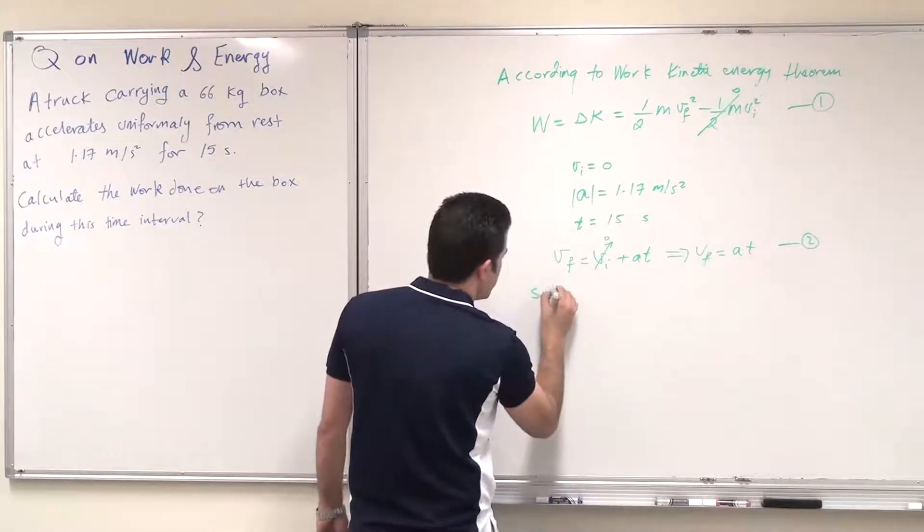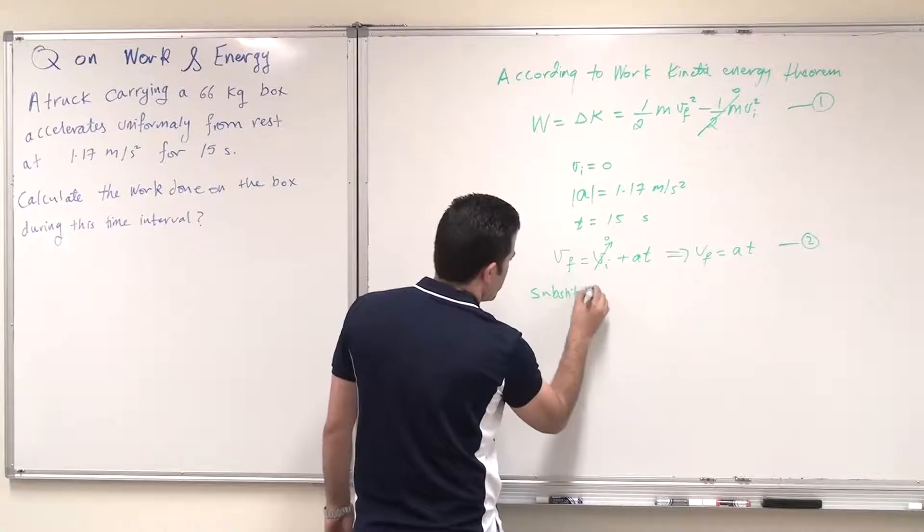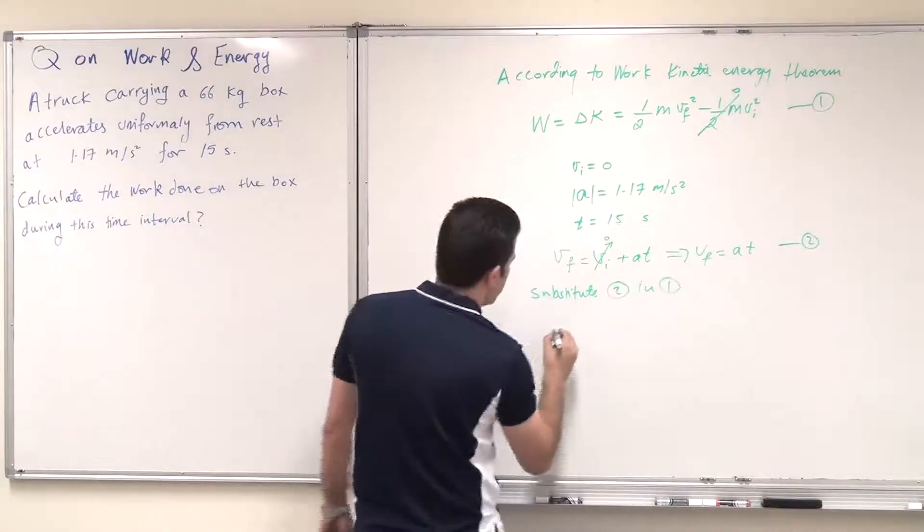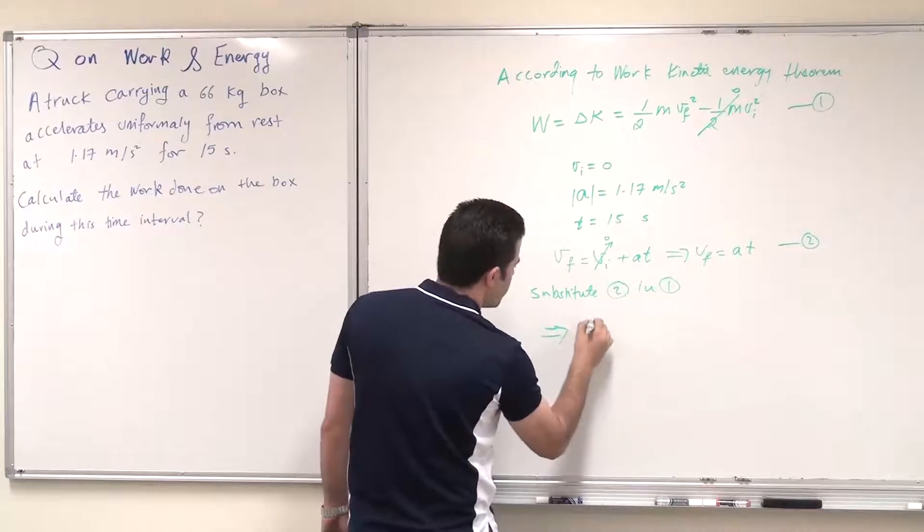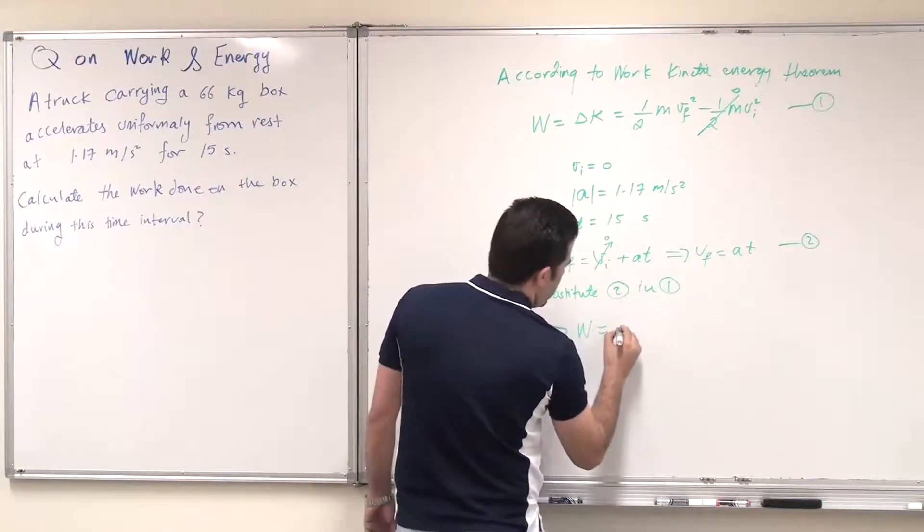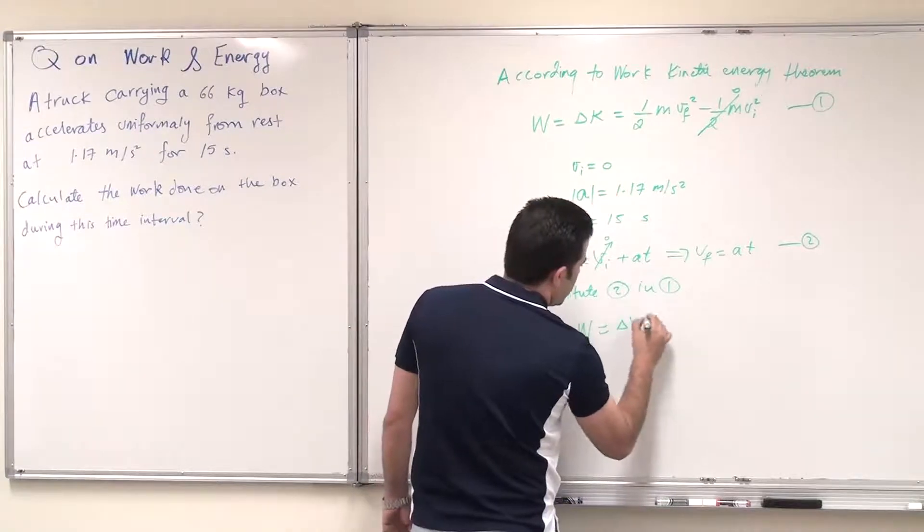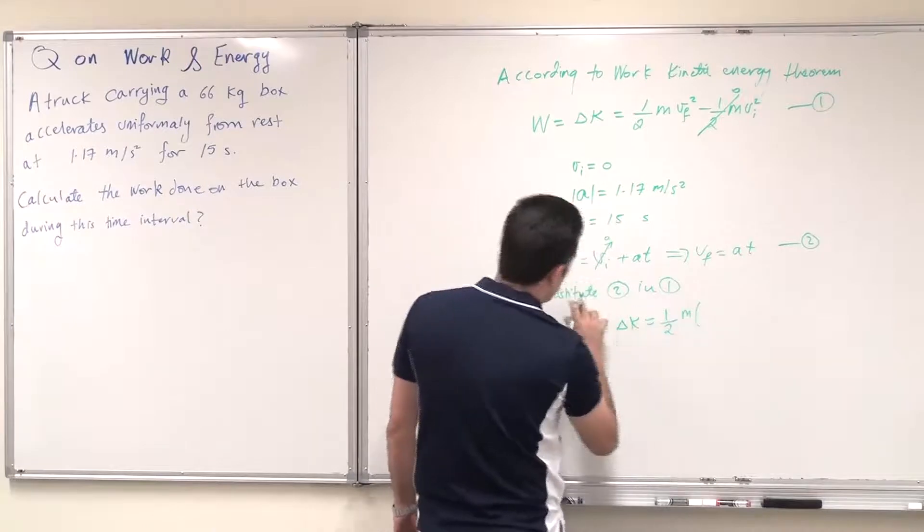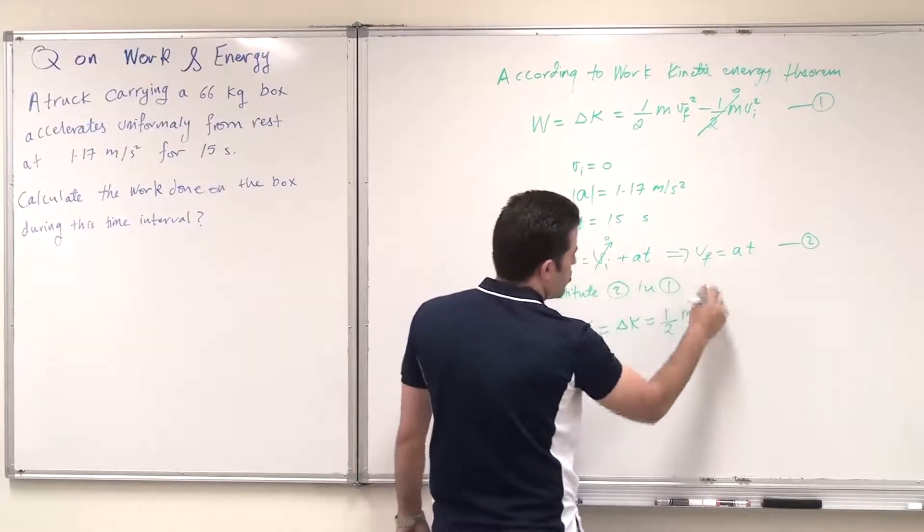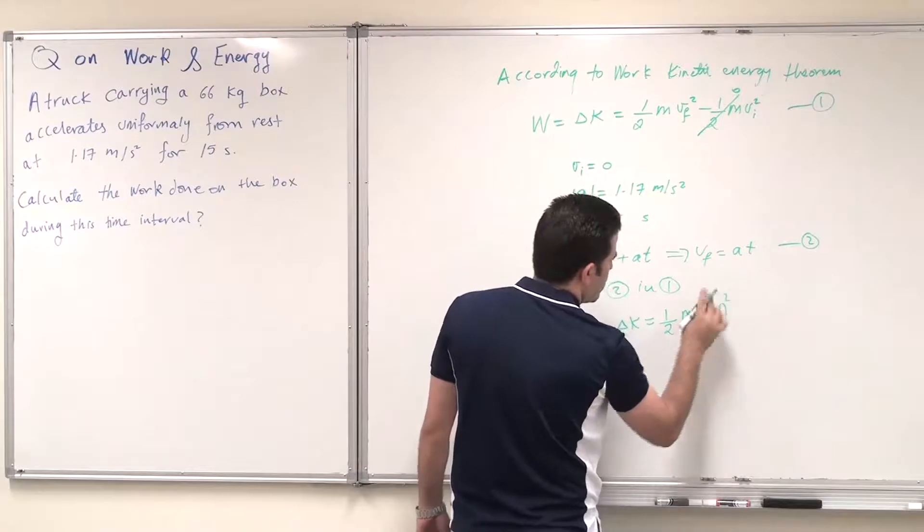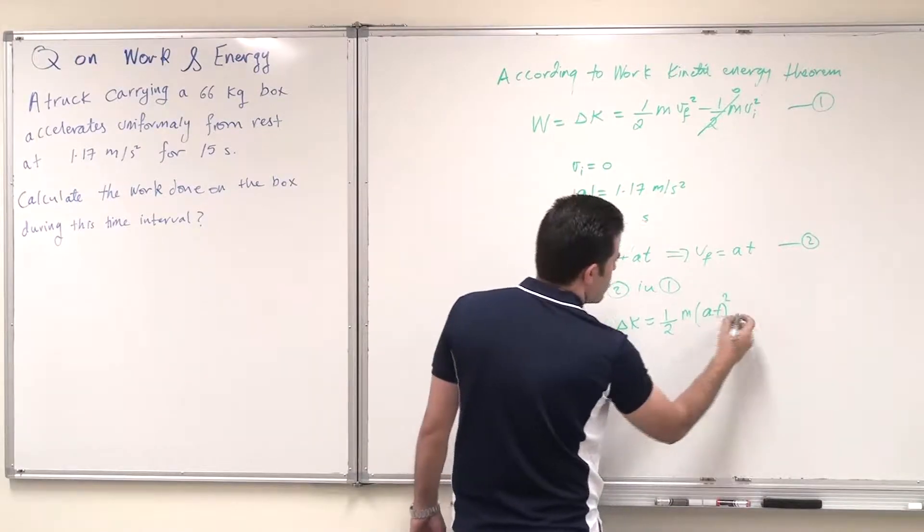So substitute 2 in 1, we get that the work done on the object equals change in kinetic energy, which is half m, so I can first substitute the abbreviations, half m a t squared, because this is v final squared,